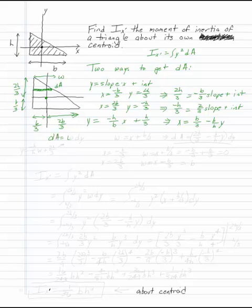So dA is w times dy, where w is x plus b over 3. Because you go backwards b over 3 from x and you have w, which gives me dA is 2b over 3 minus b over h times y dy. That's one way of getting dA.